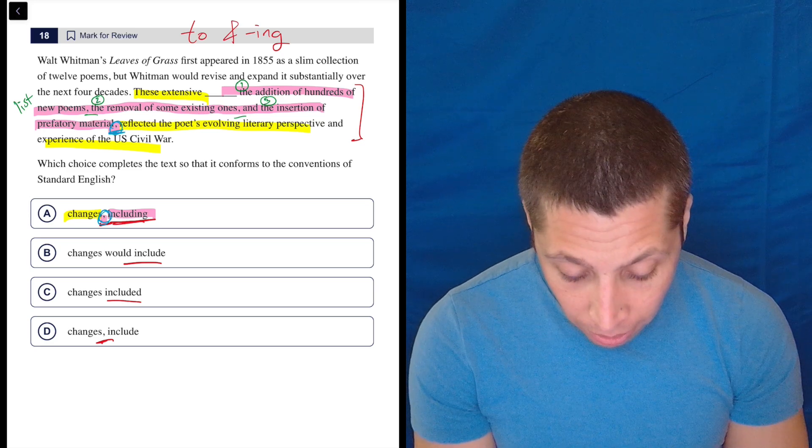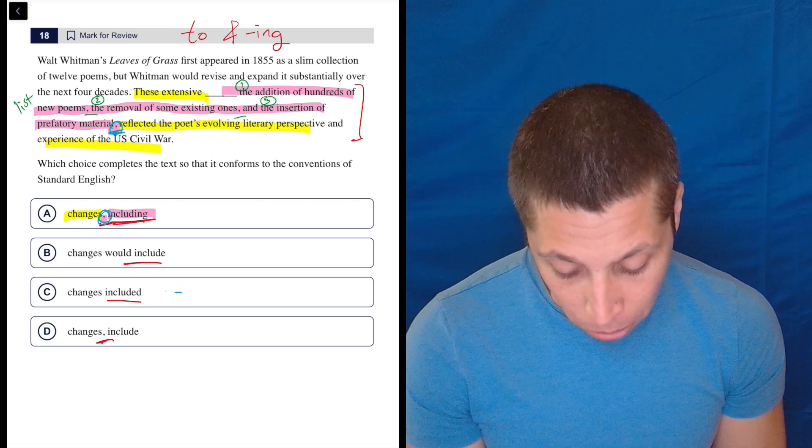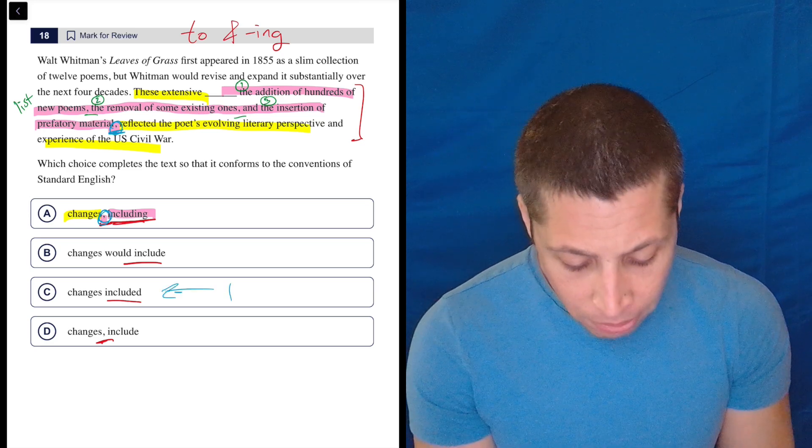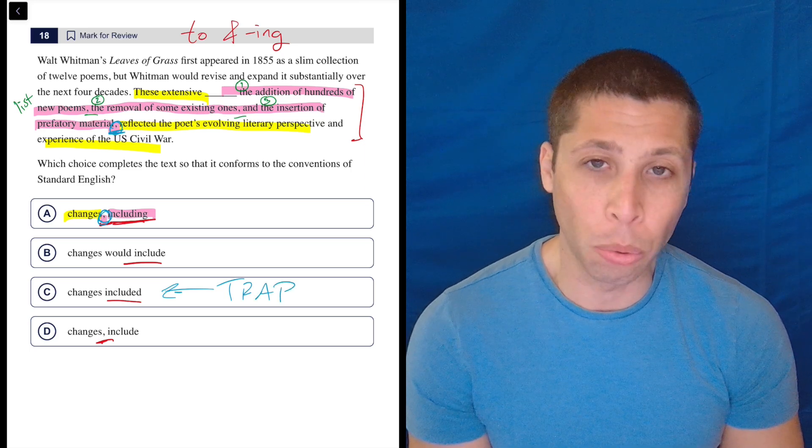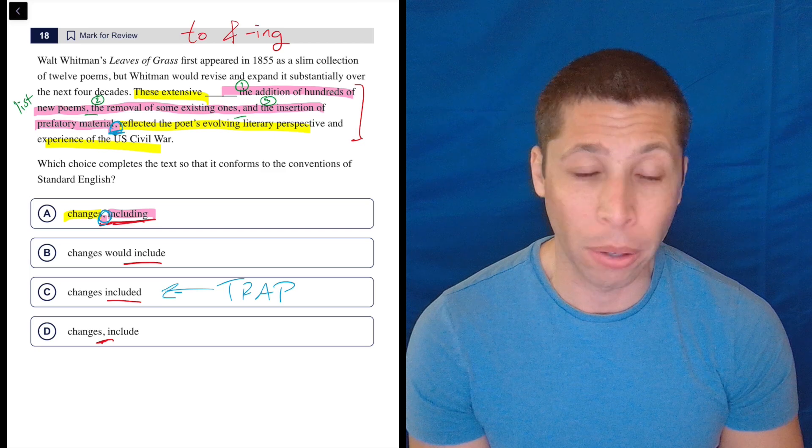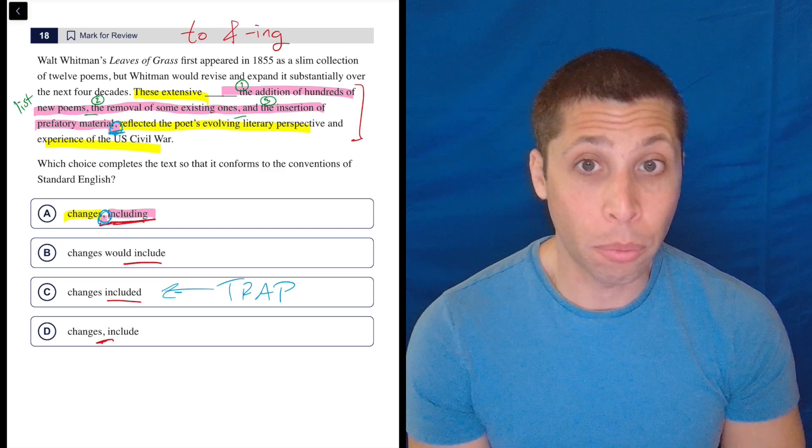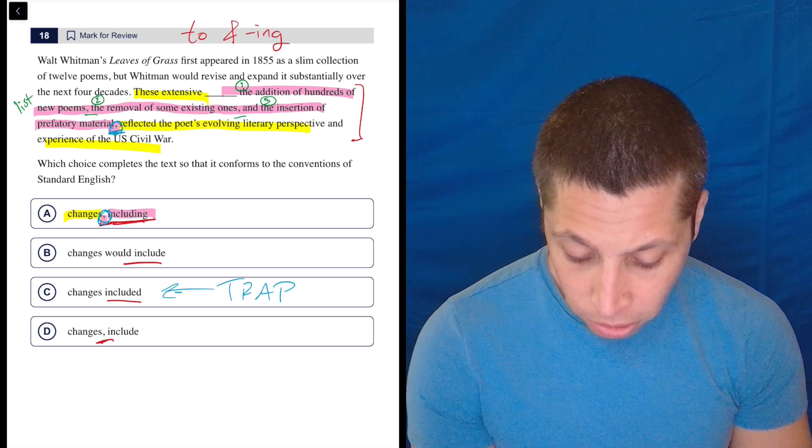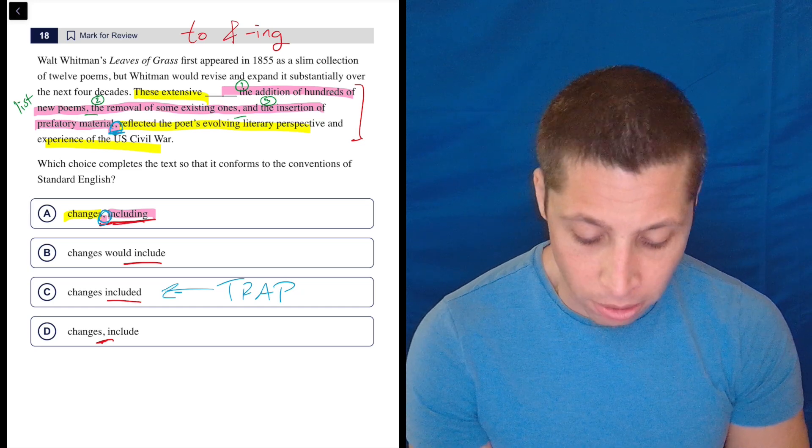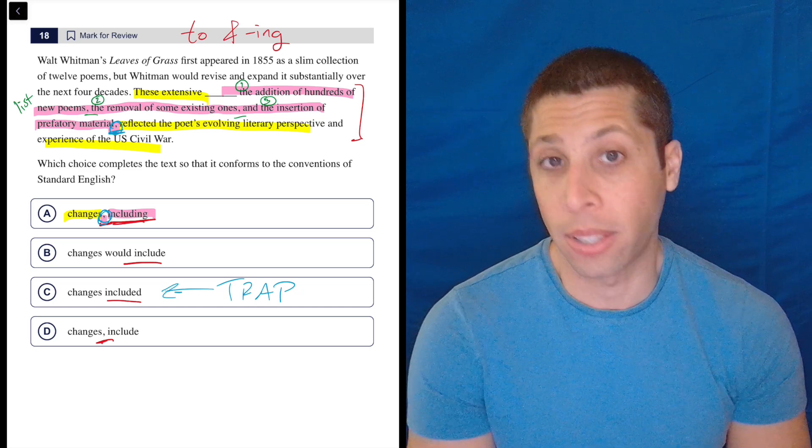So I think most of you are going to get this wrong because you're going to put C. I would think this is the trap, and this is probably what we get most often. Yes, if we don't understand the rule. And yes, if we don't speak English very well. But also if we're lazy. These extensive changes included the addition of hundreds of new poems, removal of some existing ones, and the insertion of prefatory material. Yeah, sounds great.